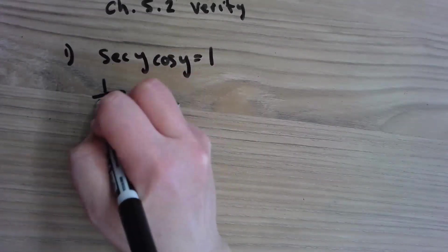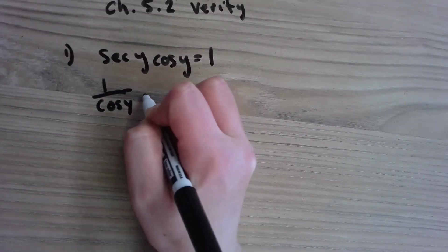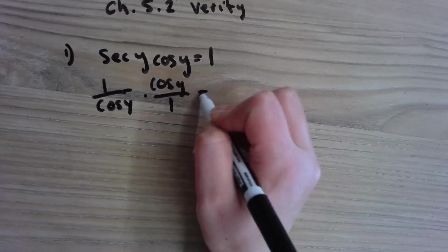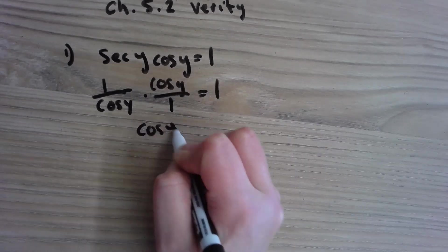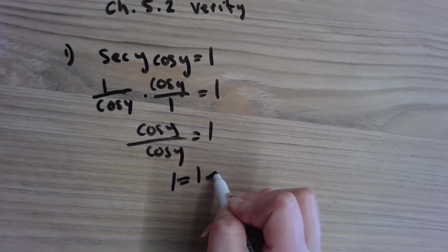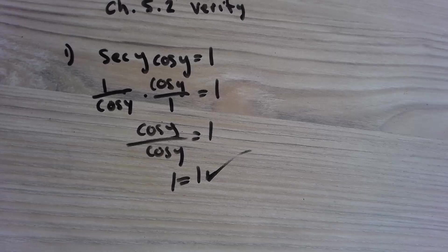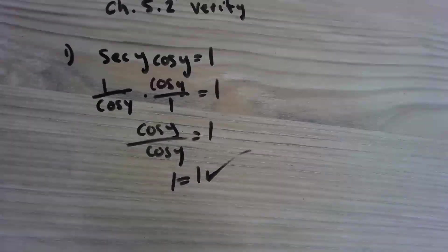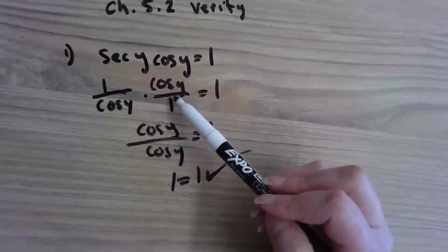So 1 over cosine y times cosine y over 1 equals 1. Cosine y over cosine y equals 1. 1 equals 1, and that would be verified.